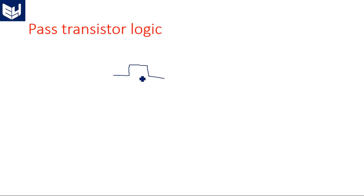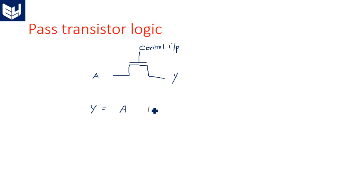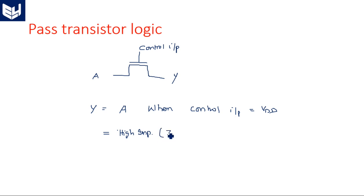In the case of pass transistor logic, a pass transistor is just a single transistor — either an NMOS or a PMOS — with input A on the left-hand side, output Y on the right-hand side, and a control input at the gate terminal. Y is equal to A when control input is equal to logic high (VDD), and it is equal to high impedance (open circuit, denoted Z) when control input is equal to logic 0.